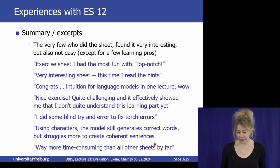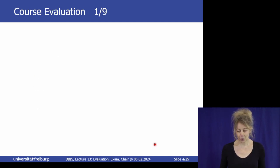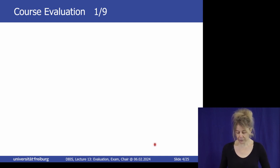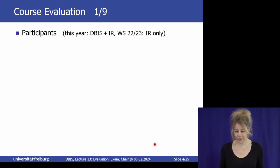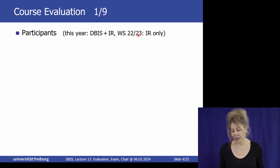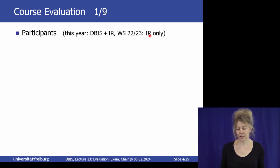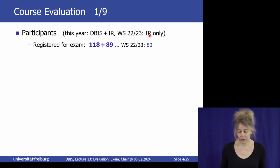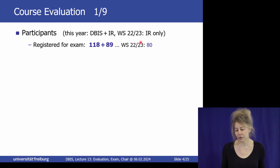So that was the last sheet — those who did it learned a lot. Now for the course evaluation. We had these two lectures this year, comparing on several slides with last winter semester which was only Information Retrieval. Registered for the exam: latest numbers are 118 for Databases and Information Systems and 89 for Information Retrieval. Last semester for IR it was 80, so that's over 200 people registered.